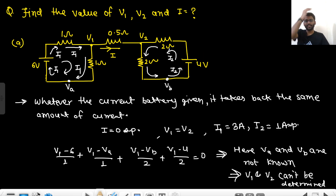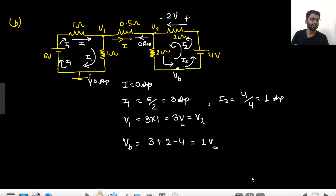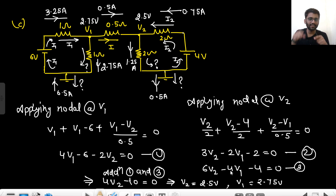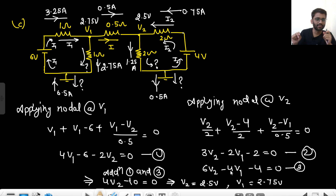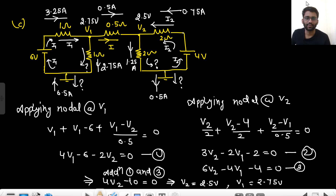I hope you understood the complete concept. There are three kinds of scenarios: one, when there is no ground mentioned — current through the middle resistance is 0; two, when there is one ground mentioned — current through the middle is again 0; three, when two grounds are mentioned — there can be current between those two nodes. So if two grounds are mentioned, there can be current. I hope you understood — if asked any question like this you will be able to answer.